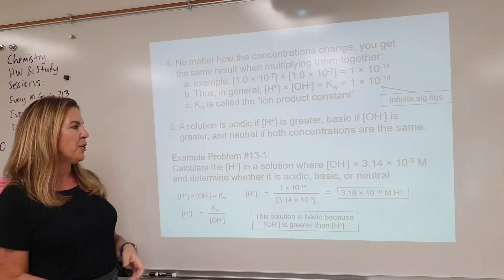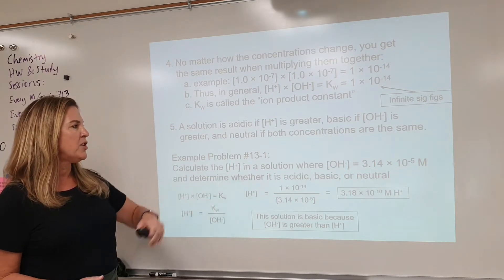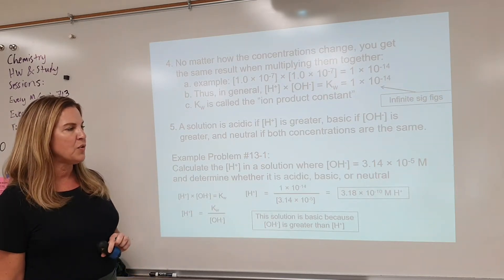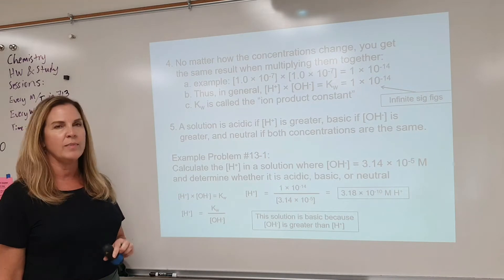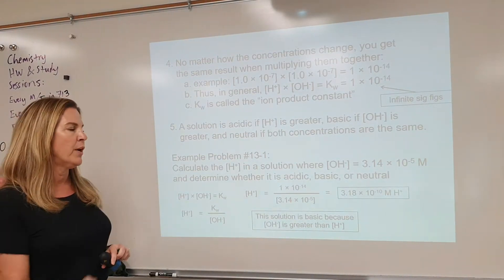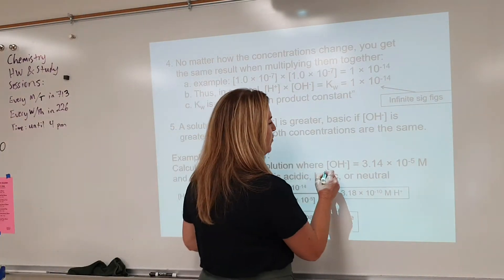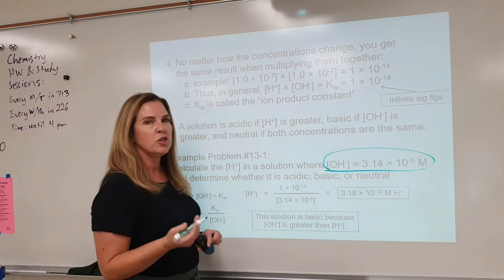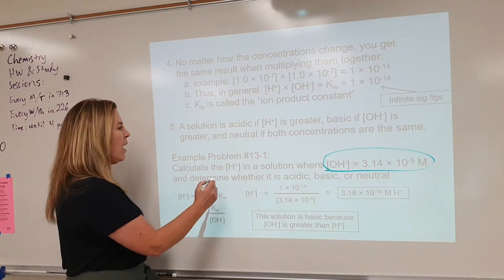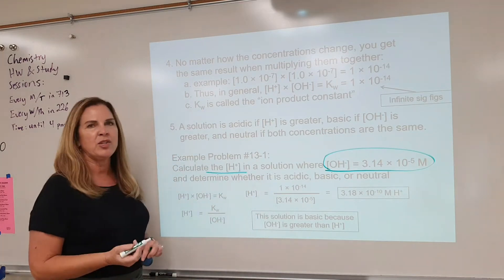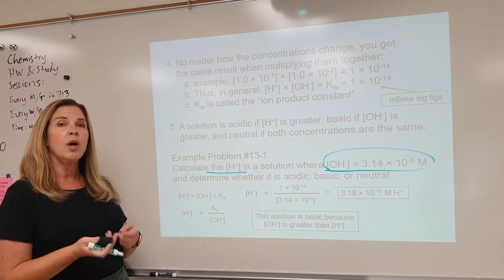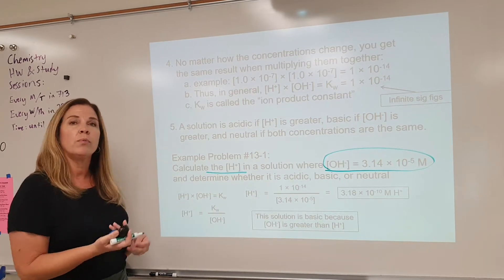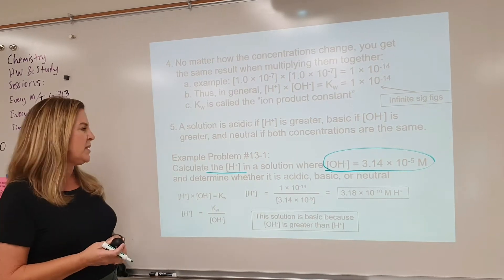As we look at this problem: calculate the hydrogen ion concentration in a solution where the hydroxide ion concentration is 3.14 times 10 to the minus 5 molar. To help with problem solving strategies, we can circle the information that we're given, underline the information that we're looking for, and that should hopefully lead us to recognizing there has to be some kind of relationship between these two things.